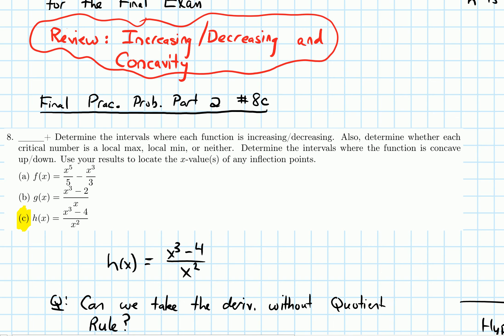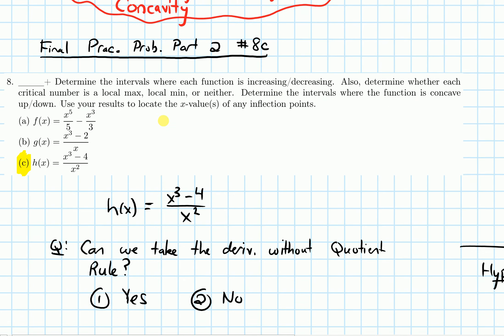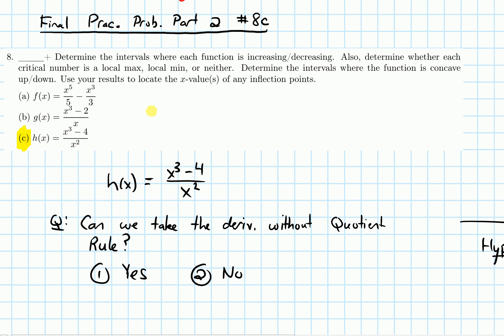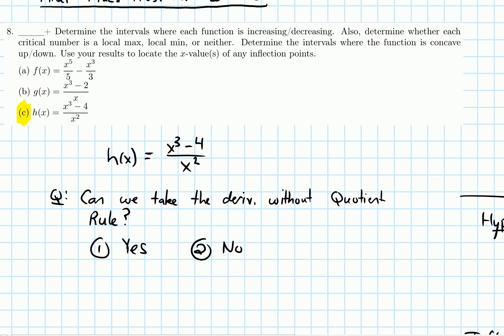Basically it wants us to do everything involving increasing, decreasing, and concavity. So I want to begin with a warm-up question: for this function, can we take the derivative without the quotient rule? Pause the video for one minute to try this question. It's a yes or no question, but if you think yes, explain why; if you think no, also explain why.